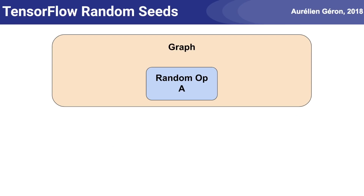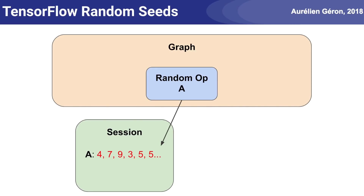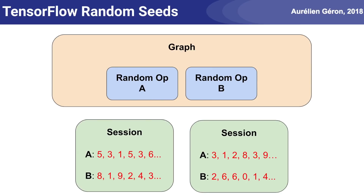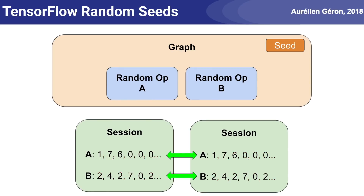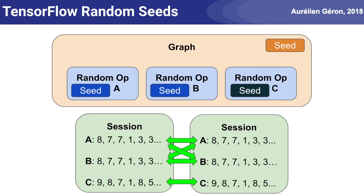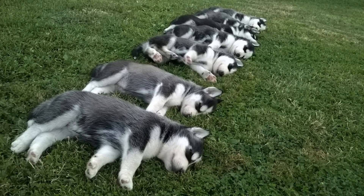There are a few bonus slides about graph seeds and operation seeds. Suppose you created a graph with a random operation A. You create a session and start a loop that evaluates the random op — this produces a random sequence. If you restart the program or run it in a new session, you will get a different sequence. If you create a second random operation, it will also generate a different sequence. Now, if you set the graph seed, the random sequences will be reproducible across multiple runs, but sequences A and B will be different — because the actual seed used by TensorFlow is a combination of the graph seed and the operation ID. If you set both the graph seed and the operation seed, the final seed is a combination of both. If you give the same seed to operation B, it will produce the same sequence as operation A. If you create another operation C with a different seed, it will generate a different sequence.